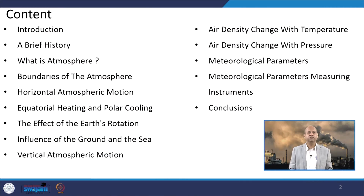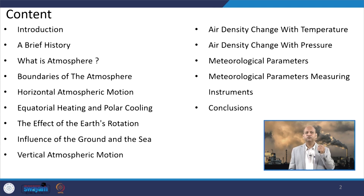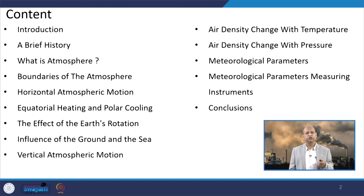We will also discuss what the atmosphere is, though we have already touched on it. Then different boundaries of the atmosphere and horizontal movement. Then equatorial heating and polar cooling, the effect of earth's rotation, influence of the ground surface and the sea on temperature distribution and pollution dispersion, vertical atmospheric motion, air density change with temperature and pressure, and meteorological parameter measurements.